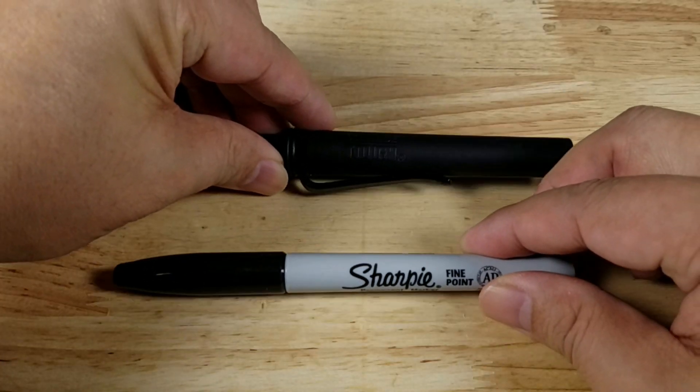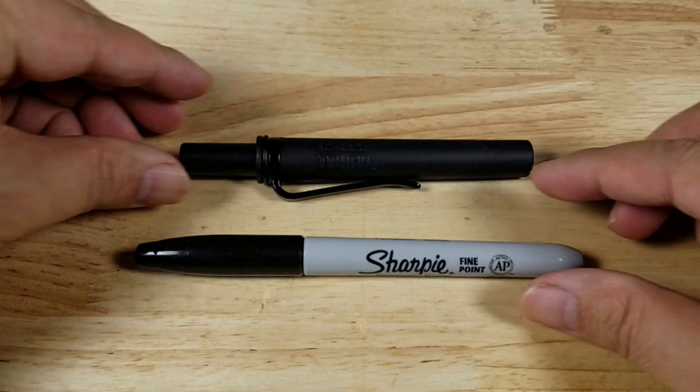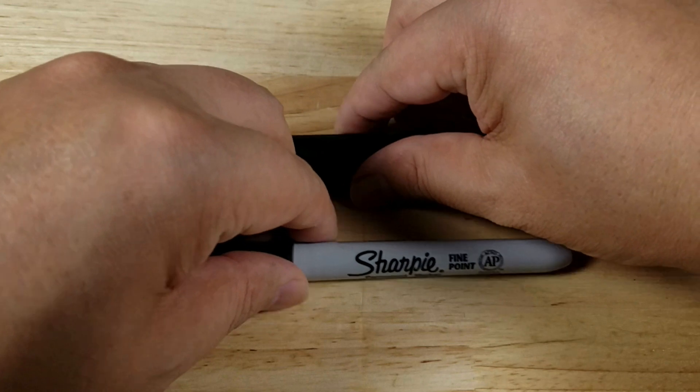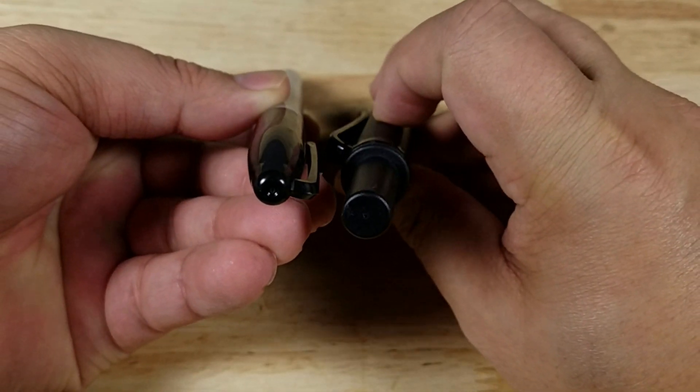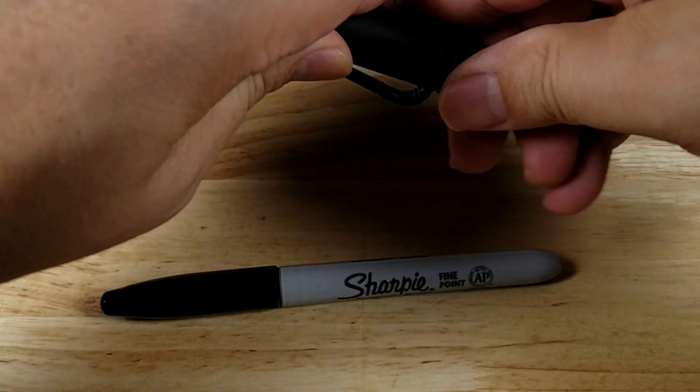Let me give you guys a size reference here. You can see that when the rod is inside of the holder, it's shorter than a Sharpie. Diameter-wise, you can see they're about the same diameter. Let me take out the rod.